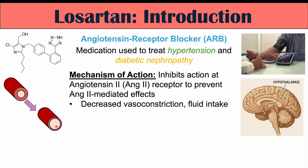Angiotensin 2 also acts on the adrenal glands, which release catecholamines like norepinephrine. Angiotensin 2 generally leads to a release of catecholamines from the adrenal glands, but Losartan blocks angiotensin 2's effect, so it prevents catecholamine release. Catecholamines like norepinephrine also lead to vasoconstriction.